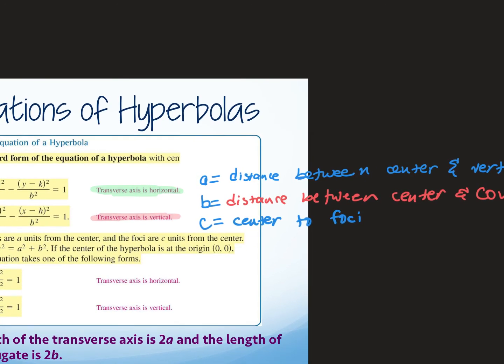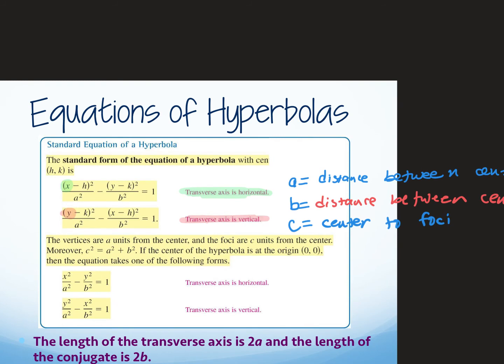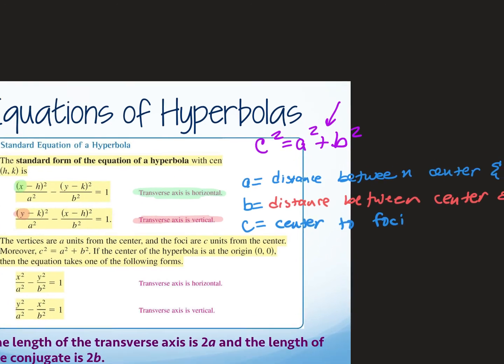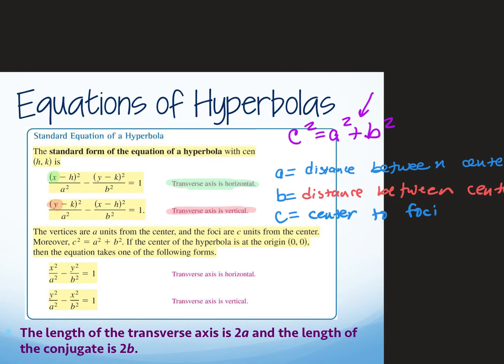There is going to be something called an asymptote — an equation of a line — where your hyperbola is going to get really close to, but not touch. We have a little equation that brings the C, A, and B values together: C squared equals A squared plus B squared. This is a little different than our ellipse — in our ellipse it was a minus in the middle, so with our hyperbola it's going to be a plus. All right, let's move along.